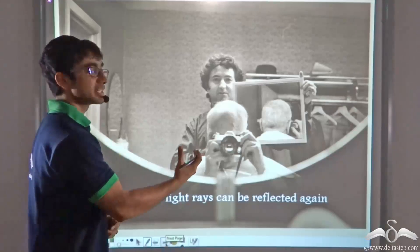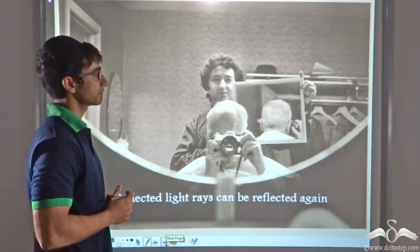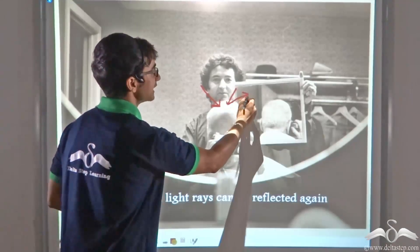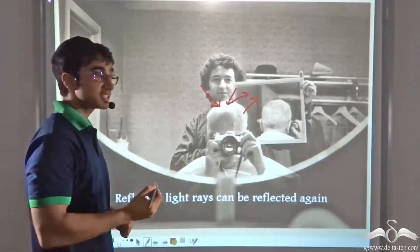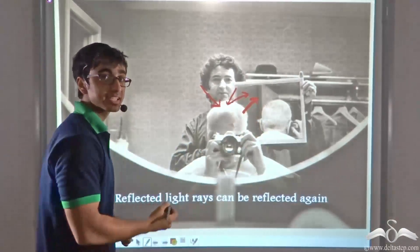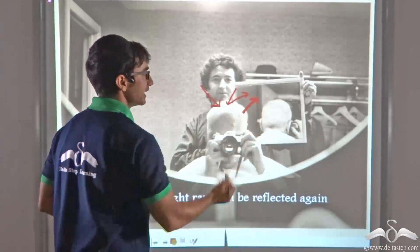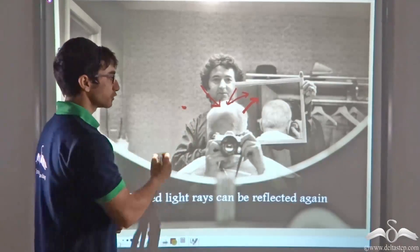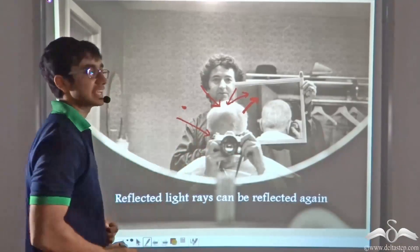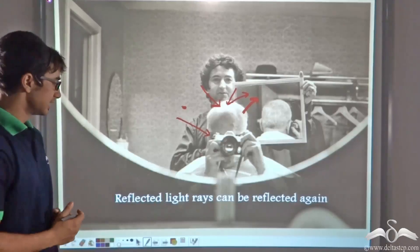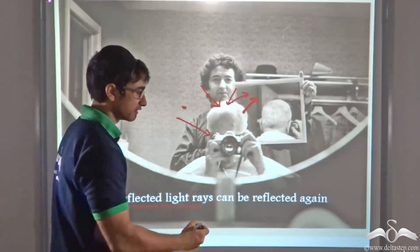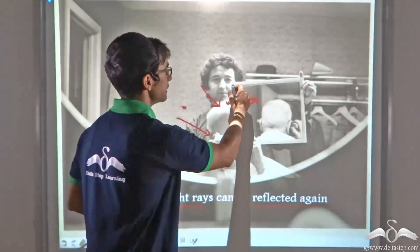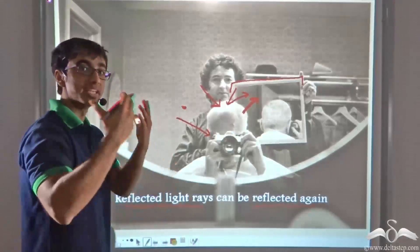When the barber is holding up another mirror behind your head, what is happening is the rays of light that are getting reflected from your head hit this mirror. After these light rays hit this mirror, they are reflected again. After reflection from the mirror behind your head, they travel to the mirror in front of you. After these light rays hit the mirror in front of you, they get reflected and they enter your eyes. This proves that reflected light rays can be reflected again. This is how we are able to see the back of our head with the help of a second mirror that the barber places behind our head.